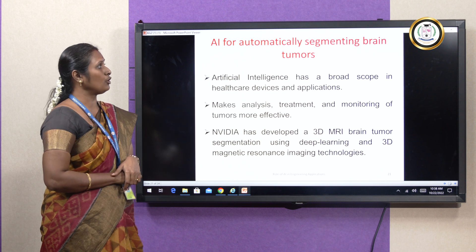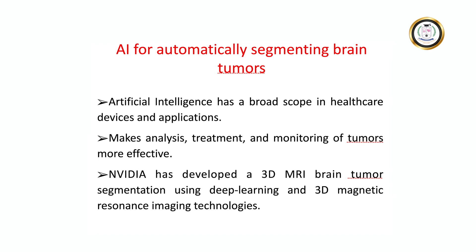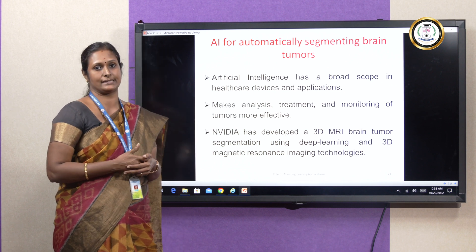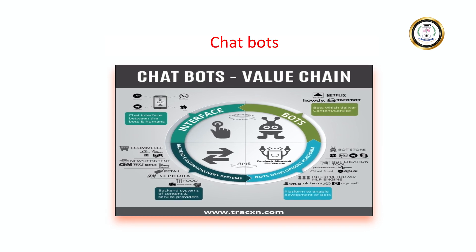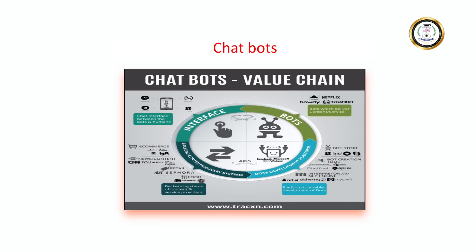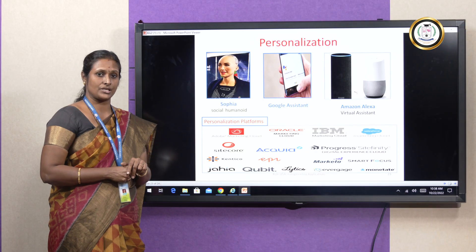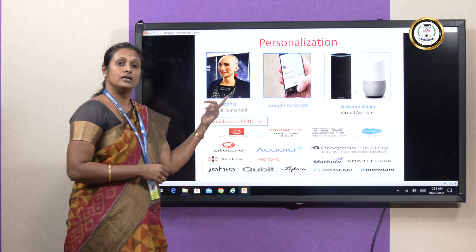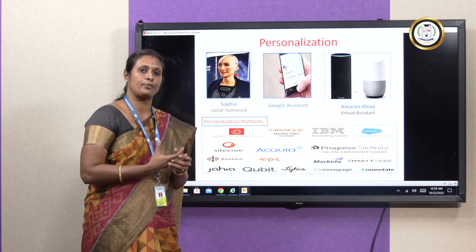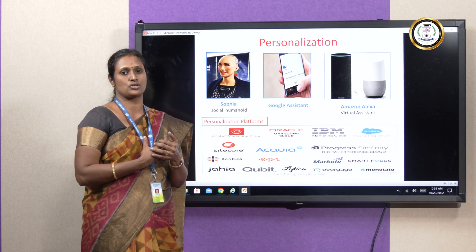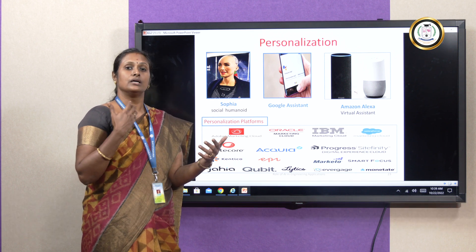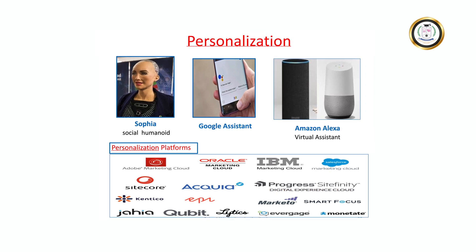In the medical sector also, AI is used for segmenting brain tumors — in the initial stage itself it helps patients to be identified, and it helps doctors to take decisions in early-stage diagnosis. In chatbots also, AI plays a major role — using a knowledge base it observes all things and gives suggestions to customers, helping industries maintain customer retention. In personalization, Sophia the social humanoid has been developed. Google Assistant and Amazon Alexa are virtual assistants. AI and its algorithms play the major role, executing and taking decisions and giving interactive responses based on algorithms defined inside these products.